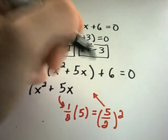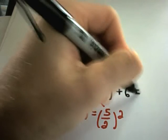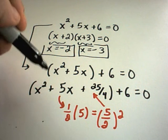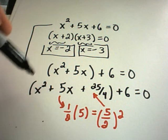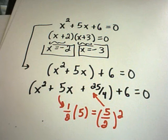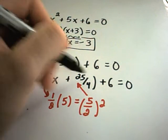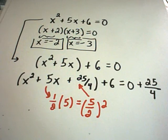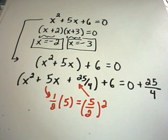5 halves squared: squaring the top gives 25, squaring the bottom gives 4, and our plus 6 is still there. Now you have to be careful, because if you expand the parentheses on the left side, there's an extra 25 over 4 that wasn't there before. Since we basically just added 25 over 4 to the left side, we're going to have to add it to the right side as well.